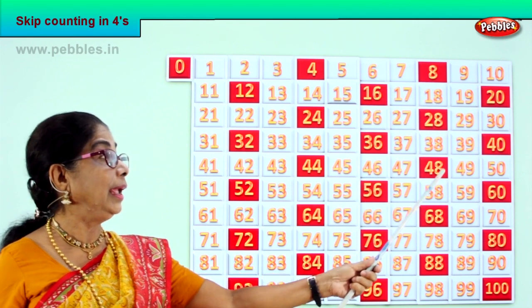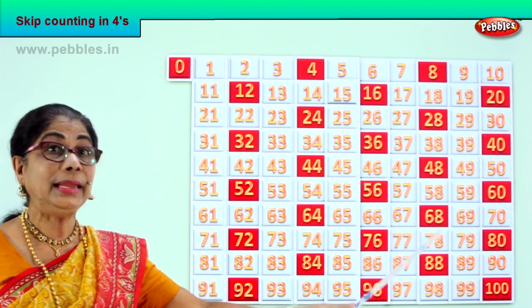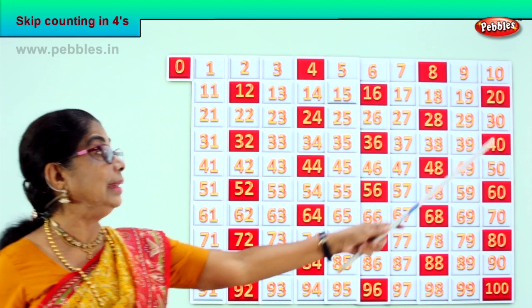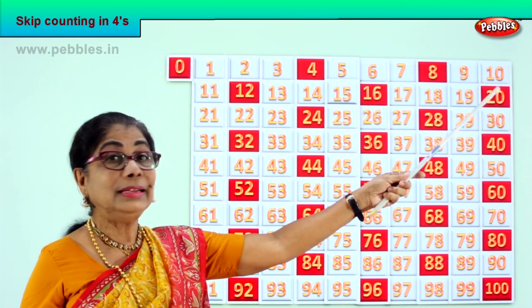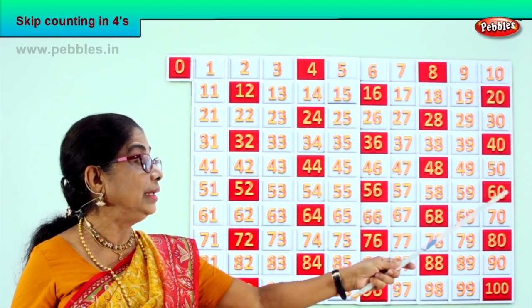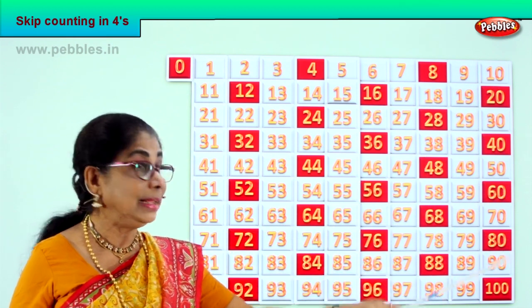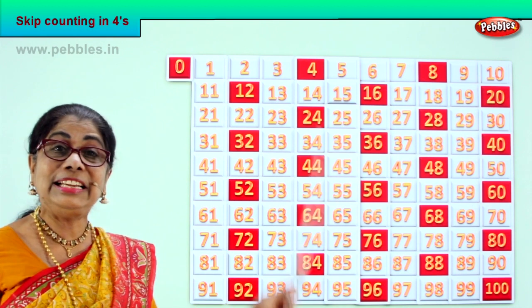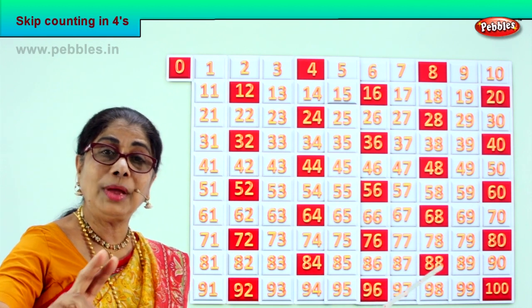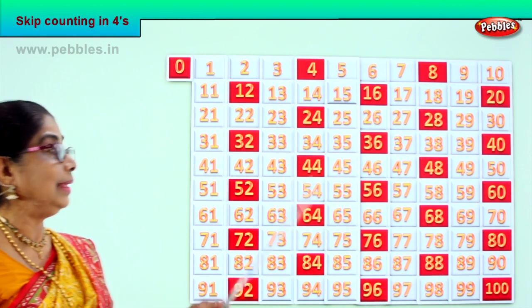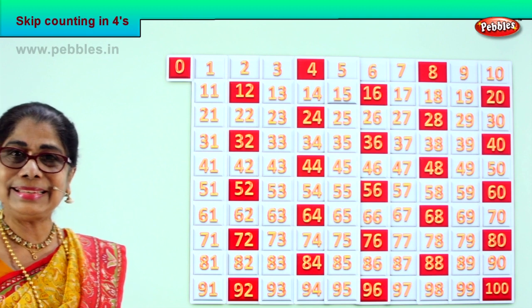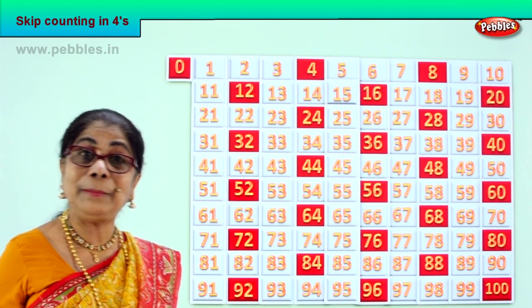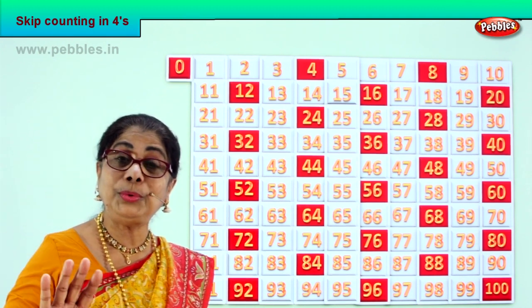And 8, 28, 48, 68, and 88. Then 20, 40, 60, 80, 100. It's a different pattern from the 2 and the 3. Yes? Good. So we learn skip counting in 4s.